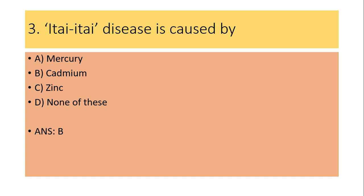Third question: Itai-itai disease is caused by mercury poisoning, cadmium poisoning, or zinc poisoning? Answer is B: cadmium poisoning. Minamata disease is related to mercury poisoning. Zinc inhalation of freshly formed zinc oxide, formed during the welding of galvanized materials, causes a condition called zinc shakes, zinc chills, or metal fume fever.